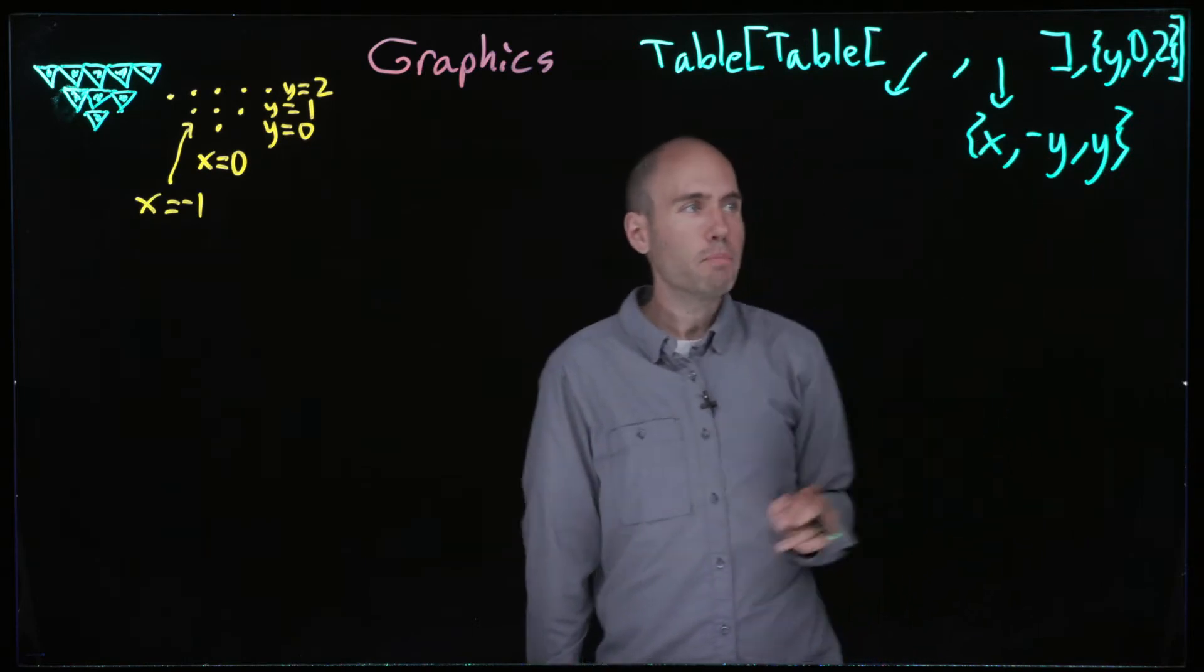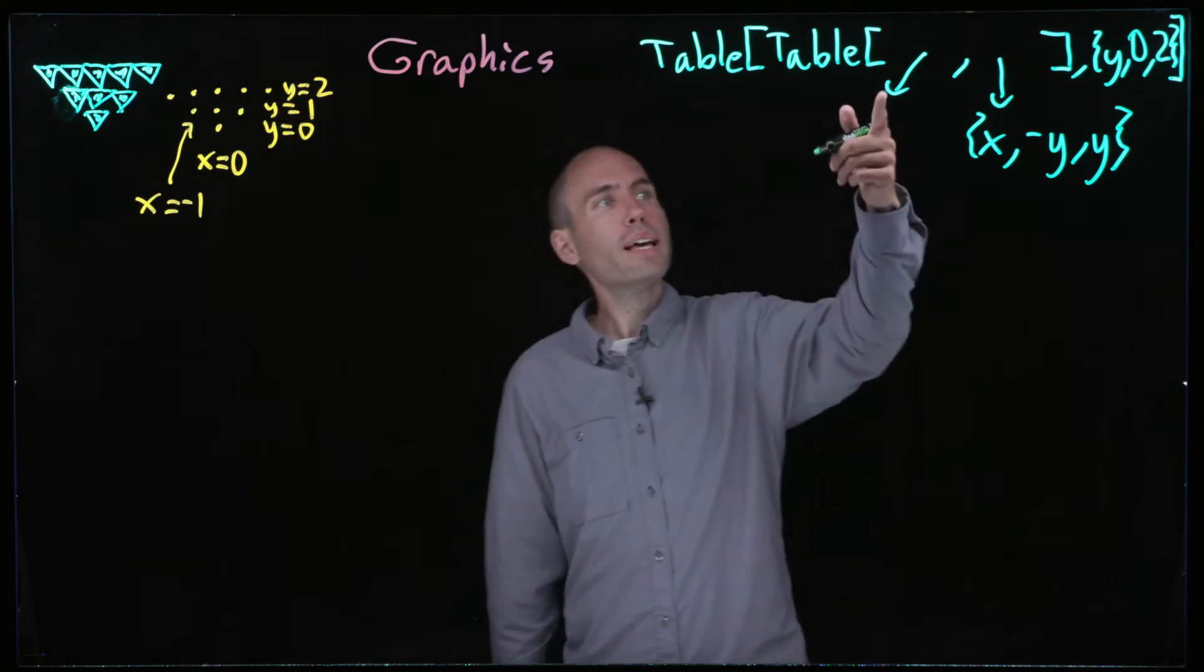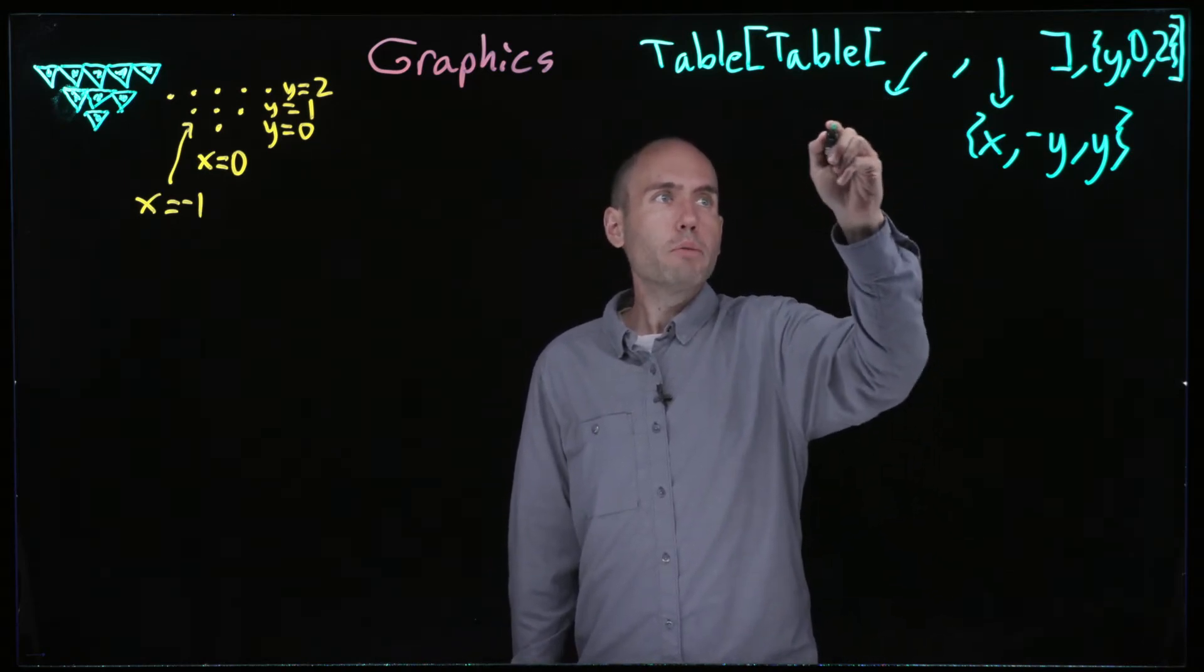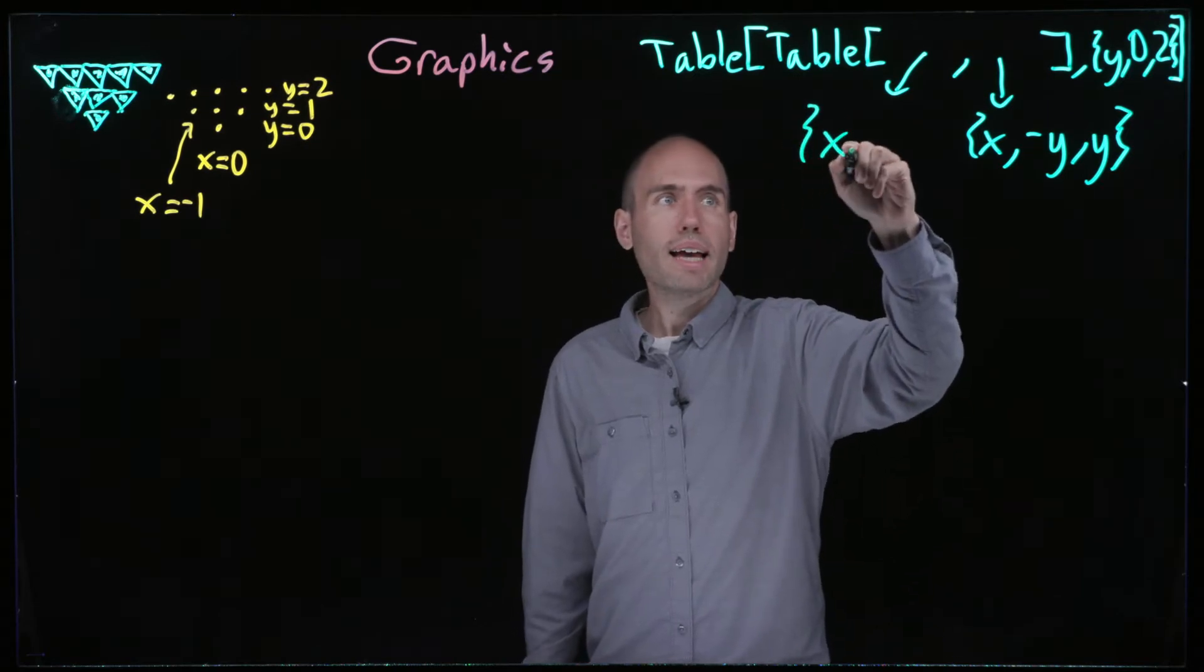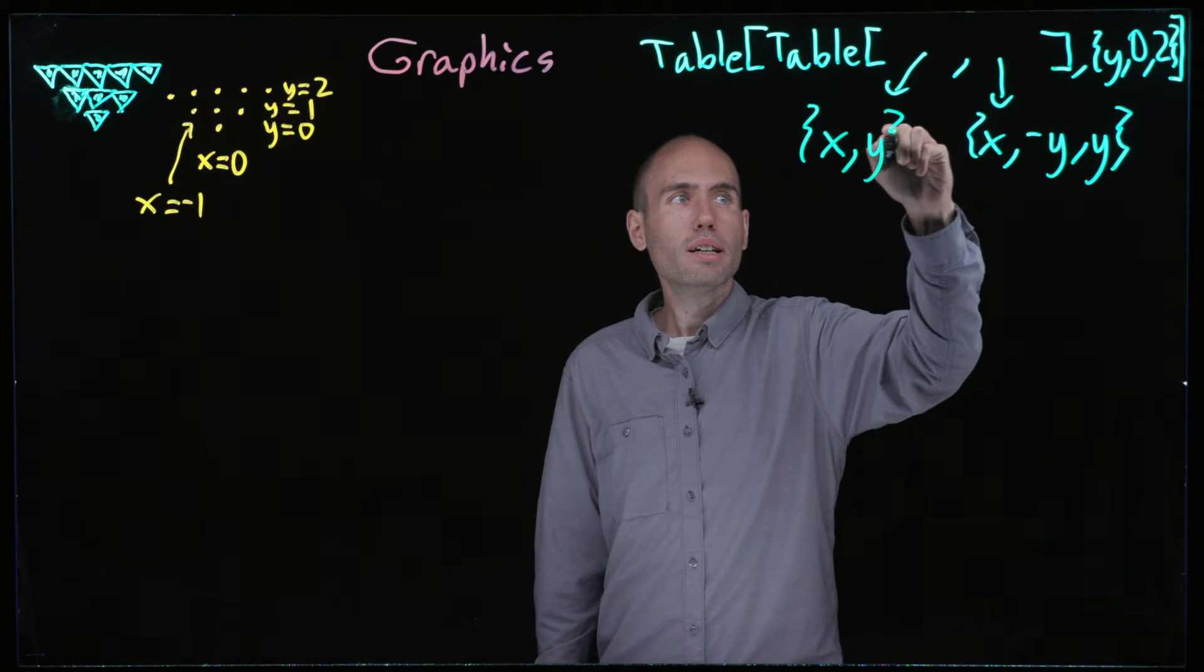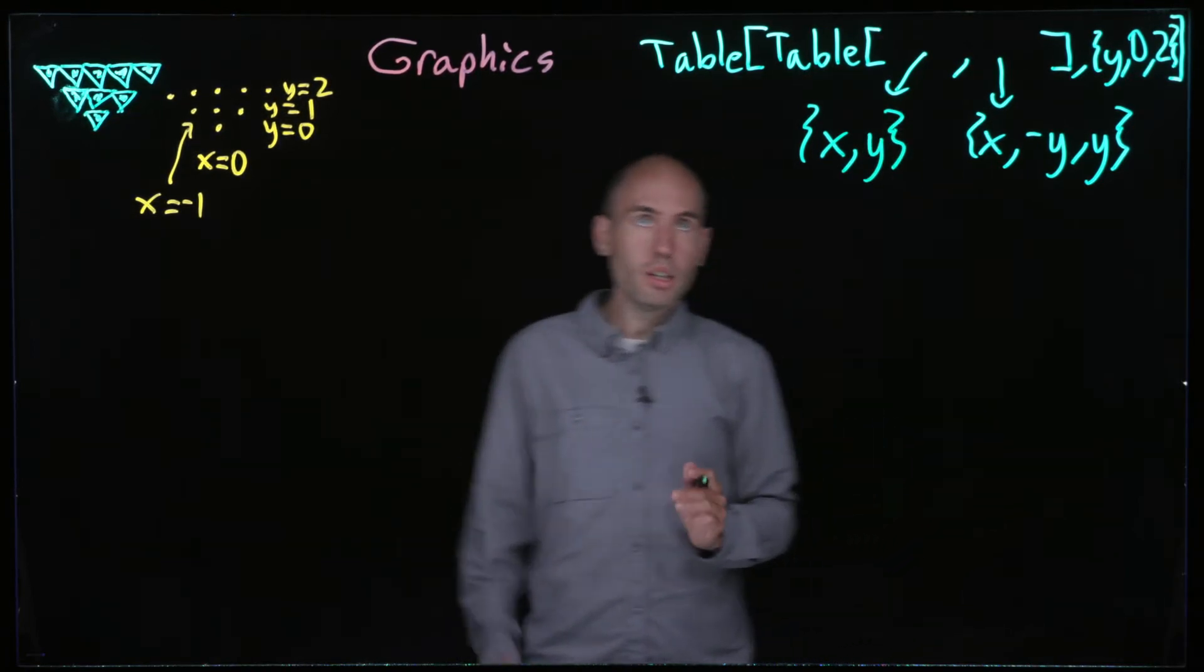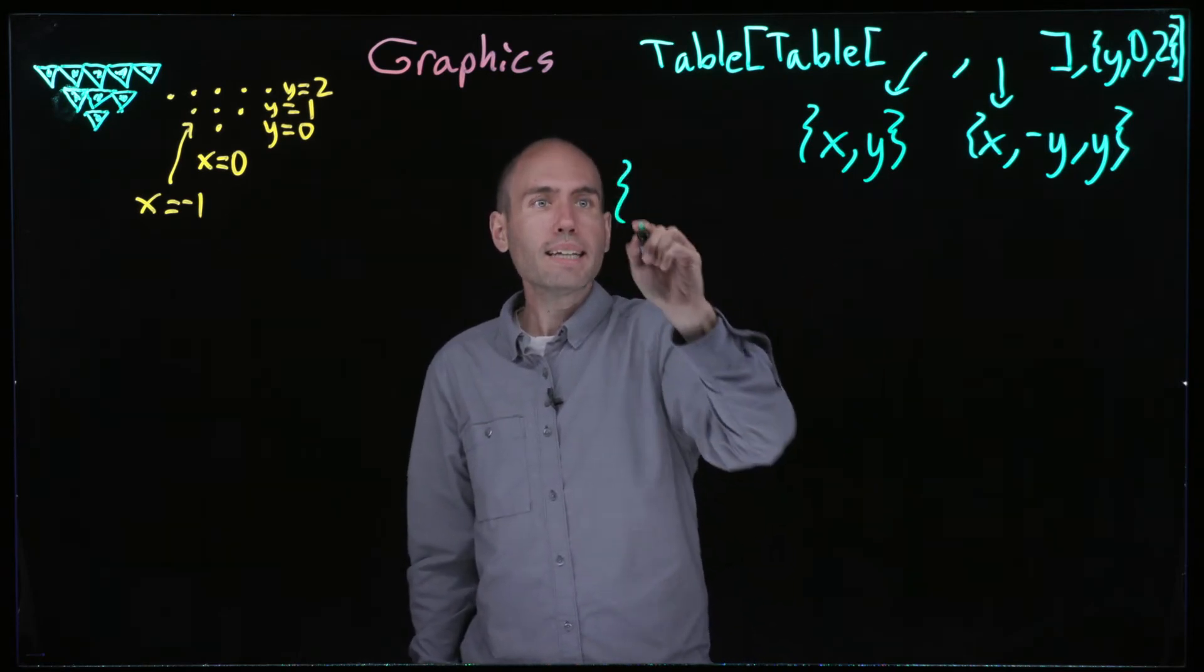Then what's this point going to be? This point is going to be, I guess this is the easiest part, just x comma y. So if I try writing this whole thing out, what am I going to get?